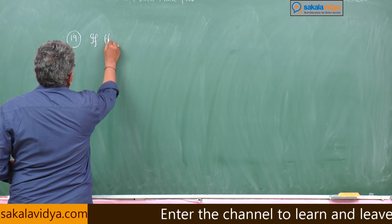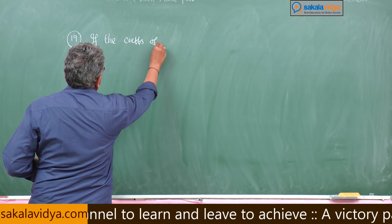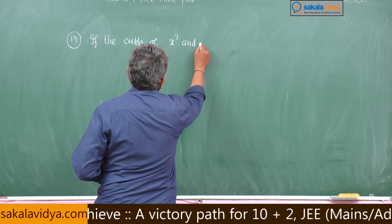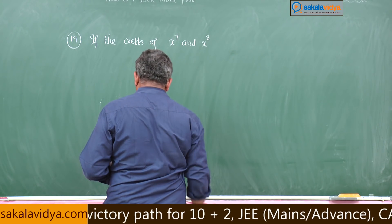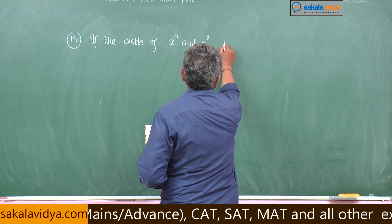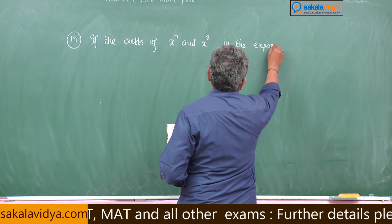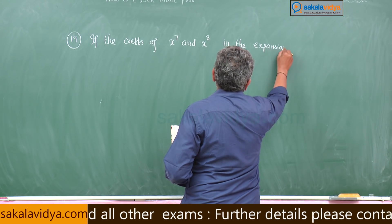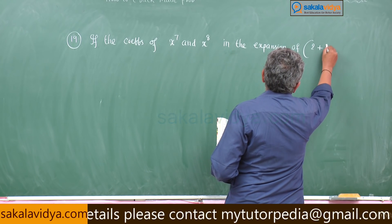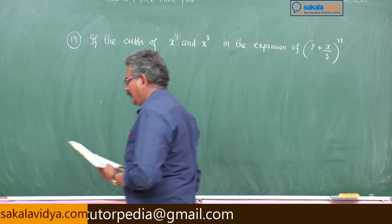If the coefficients of x to the power of 7 and x to the power of 8 in the expansion of 2 plus x by 3 whole power n are equal,